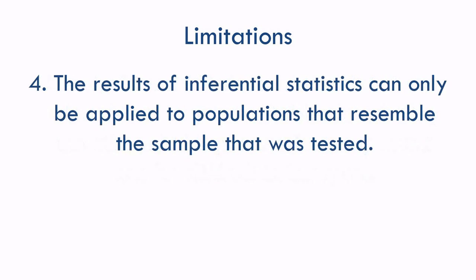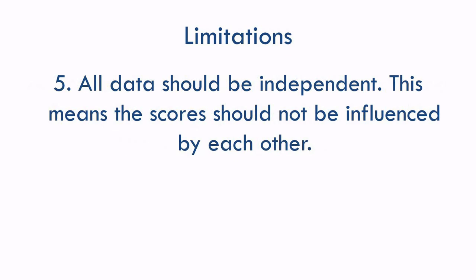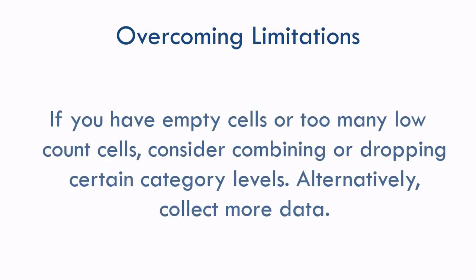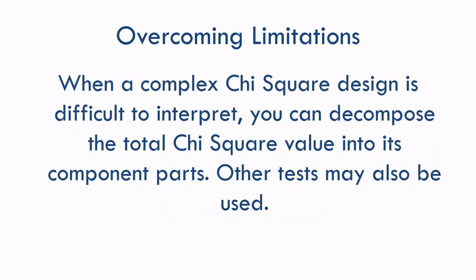Then there are limitations that go with all inferential statistics. One is that you can only generalize your results to a population that resembles your sample. So our example with gender and major might generalize to our university, but not to another university that may be quite different. All data should also be independent — this means one case doesn't influence any other case. If your data breaks some of these rules, you do have options. If you have empty cells or too many low-count cells, you may want to combine certain categories into a bigger category, or drop certain levels from your analysis altogether. Alternatively, you could collect more data. If you have a very complex chi-square design, you can decompose the total chi-square value into its component parts, and you may want to look at your data in other ways with other tests.